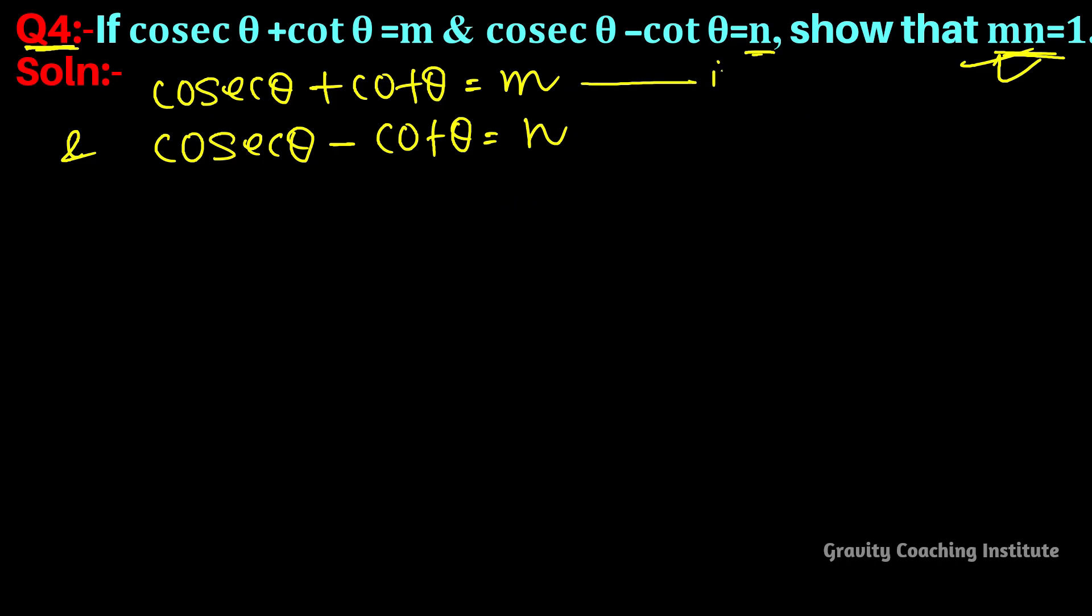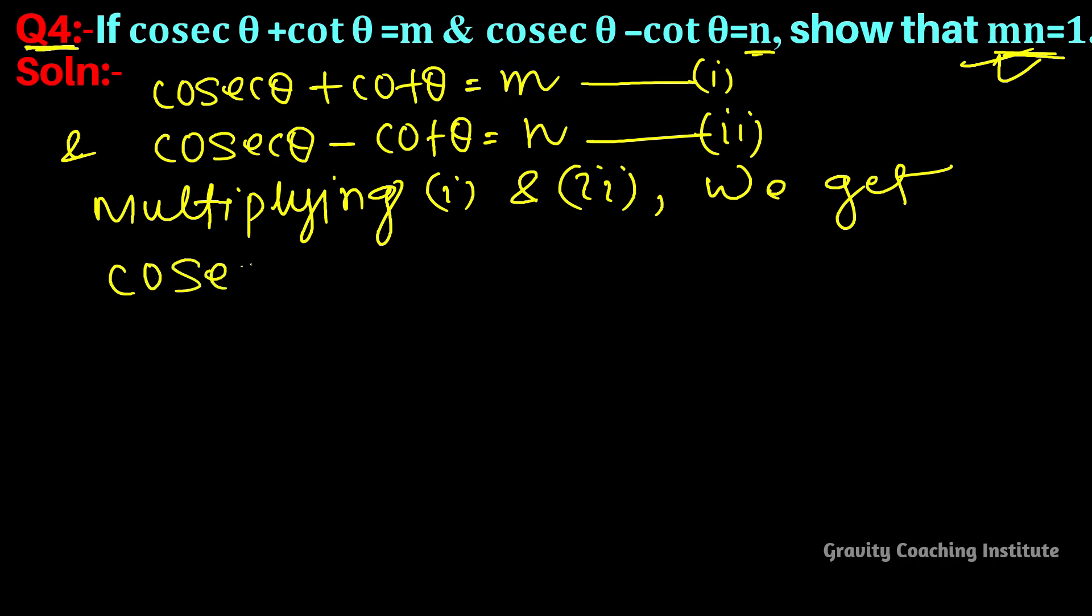So suppose we take this as the first equation and this as the second, and then multiply these two together. Multiplying equation first and second, we get the left side multiplied together.